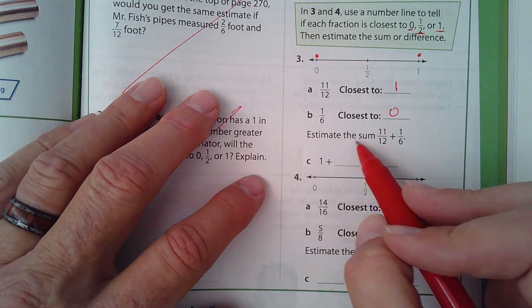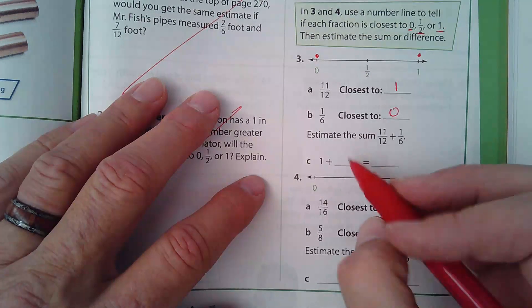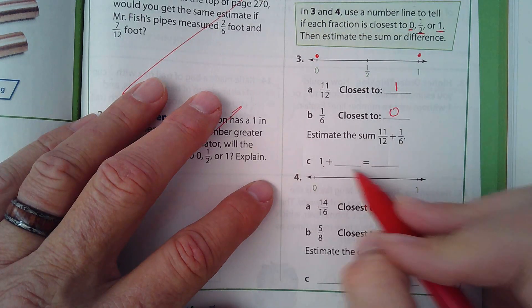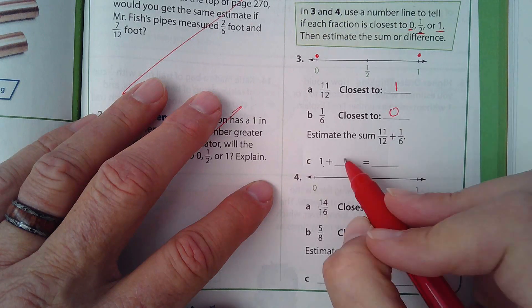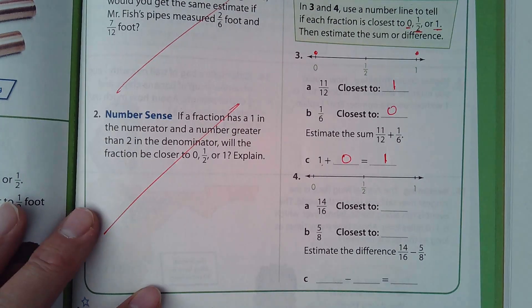And then it says, estimate the sum of eleven-twelfths and one-sixth. Well, eleven-twelfths is one, plus zero equals one. That's all they're asking you to do there.